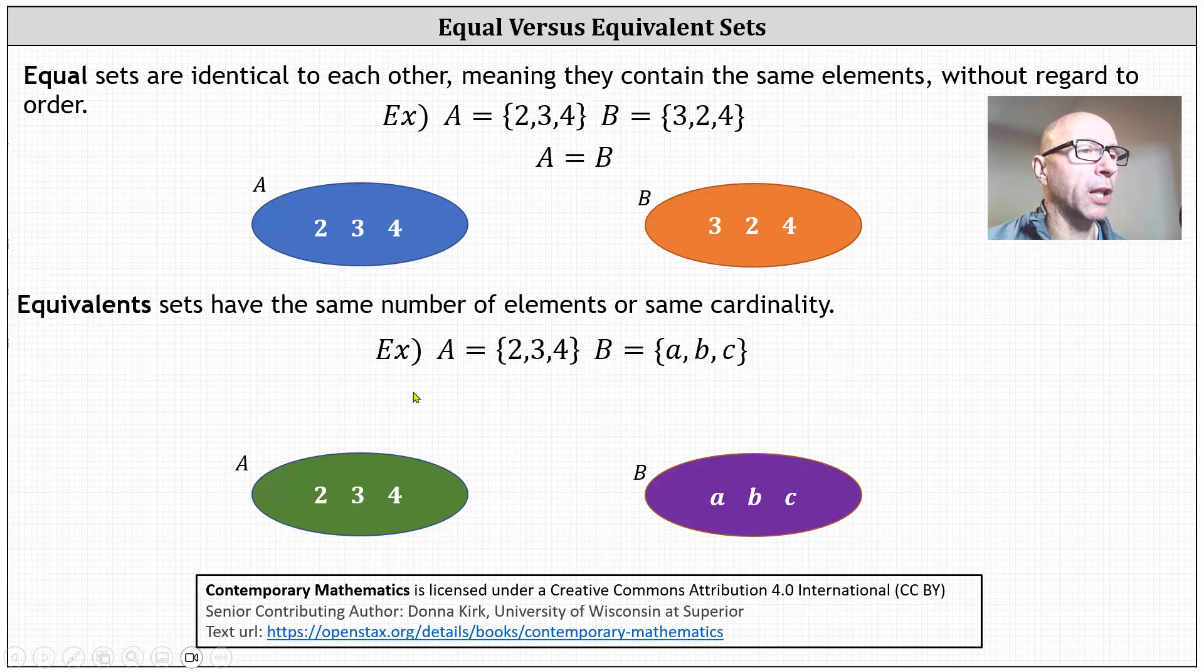set A contains three elements or has cardinality of 3. Set B also has three elements and therefore has cardinality equal to 3. And therefore, the two sets are considered equivalent, and we use this symbol here for equivalents.